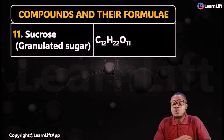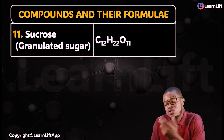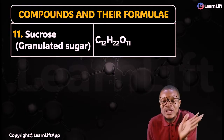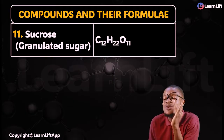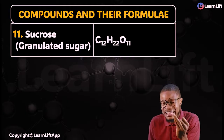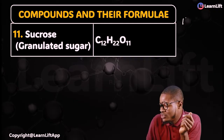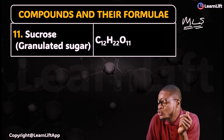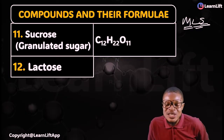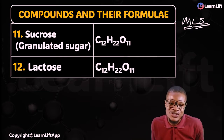Number 11 is sucrose, also called granulated sugar. The formula is C₁₂H₂₂O₁₁. Sucrose is a disaccharide. The MLS disaccharides are maltose, lactose, and sucrose — all with the formula C₁₂H₂₂O₁₁. Number 12 is lactose, also a disaccharide with the same formula C₁₂H₂₂O₁₁.